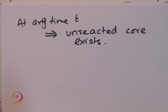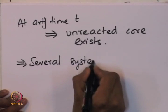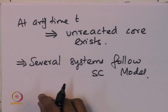Experiments where solid cores were cut open after reaction to examine the extent of carbon consumption have confirmed that several systems follow the shrinking core model. Let us now look more deeply into the shrinking core model since it is relevant to many systems. Assuming a spherical particle of initial radius r₀.